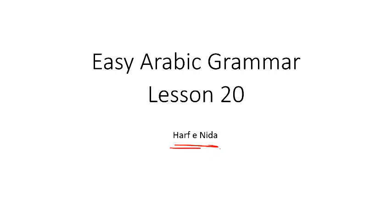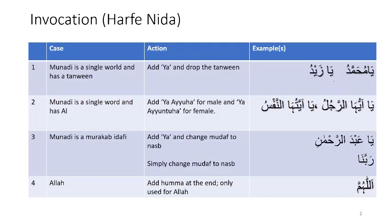In this lesson, we will talk about Harf Nida. Nida means to call, so Harf Nida are those words that are used to call someone. Here I summarize the different ways of calling someone, and there are two key words: Ya and Humma. So if we want to call Muhammad, we say Ya Muhammad. If we want to call Zaid, we say Ya Zaid. There are some situations where we say Ya Ayyuhah or Ya Ayyatuhah, and some situations where we can call without Ayya, and then we have Humma. Now let's look at these different scenarios in detail.